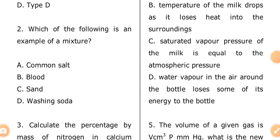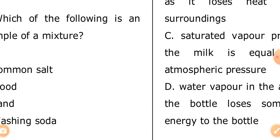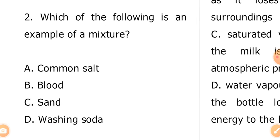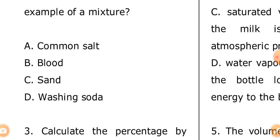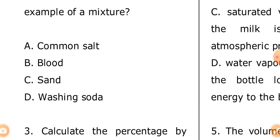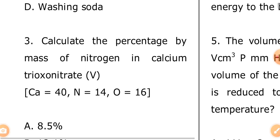Let's look at number one: which of the following is an example of a mixture? A — common salt, B — blood, C — sand, D — washing soda. The answer is blood. Watch this video; this is part one and there will be part two. The more videos you watch, the more likely you are to pass. Remember, JAMB repeats questions but they twist them.